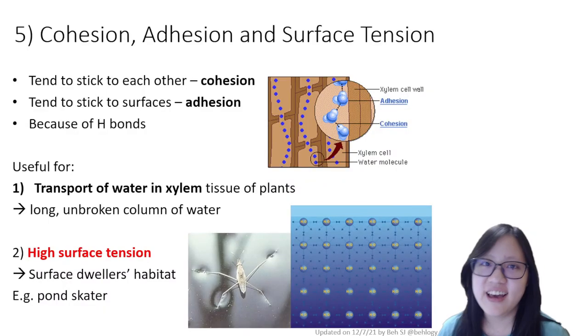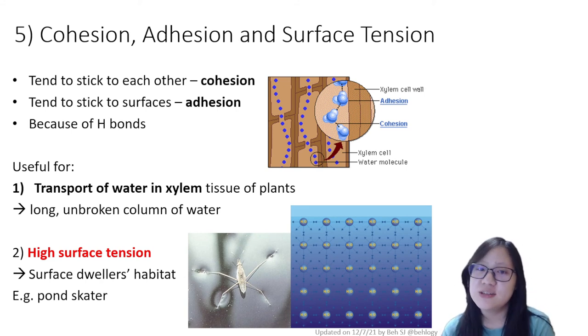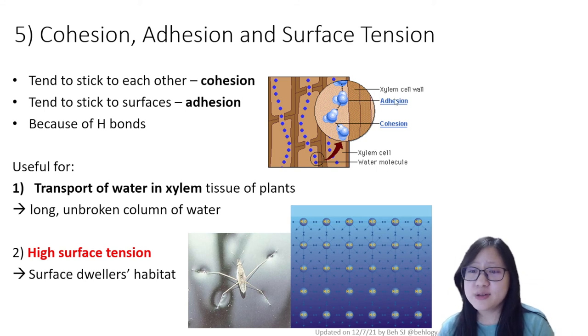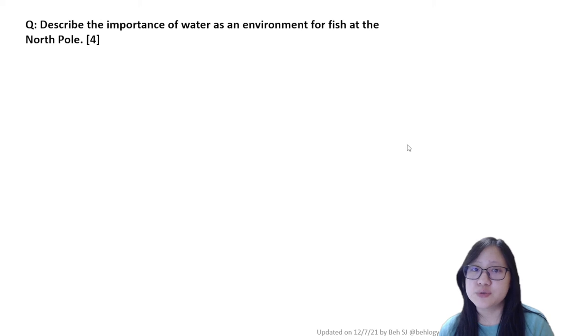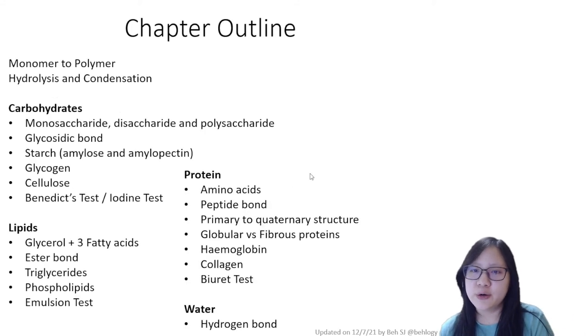With that we are pretty much done with all the five properties of water we need to know, and mostly it's due to its dipole nature and hydrogen bonding. With that we're also done with the entire chapter two. There is an example question at the end of this slideshow and you can look through it on your own. There are quite a few strange points such as water is transparent so fish can see. But anyways, you can look through that on your own.